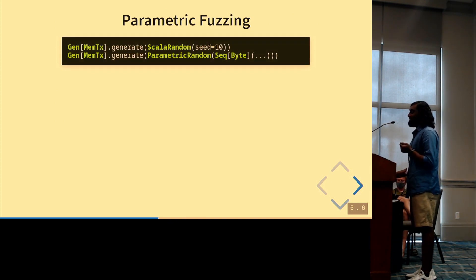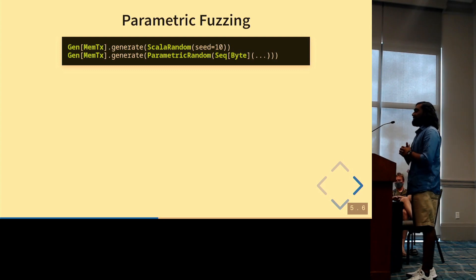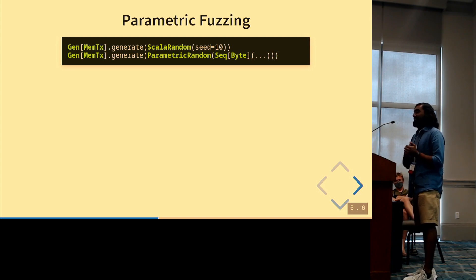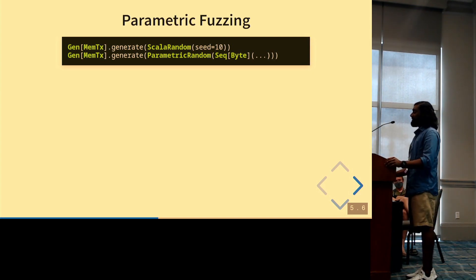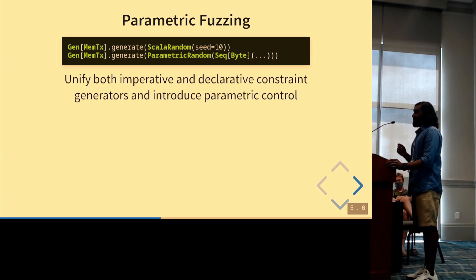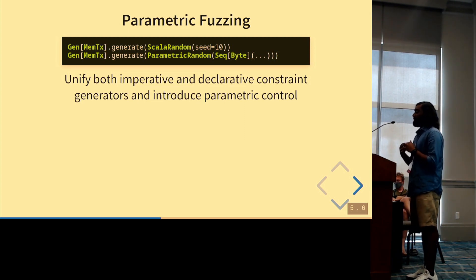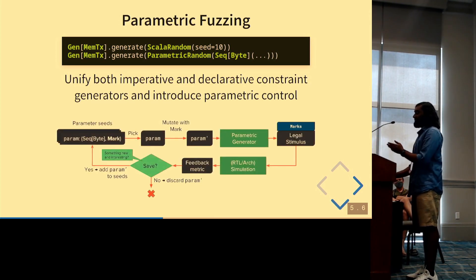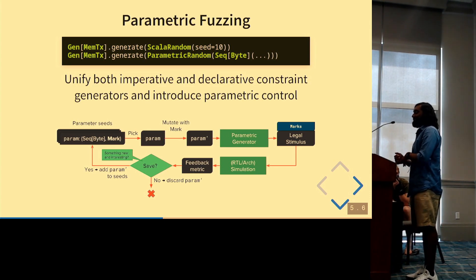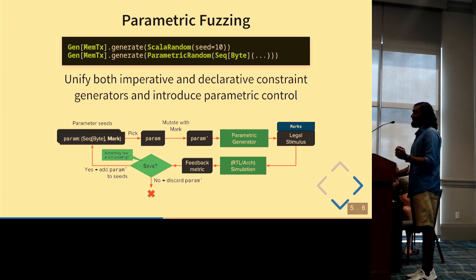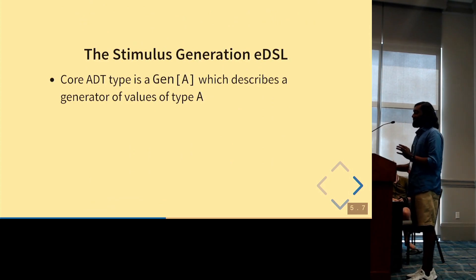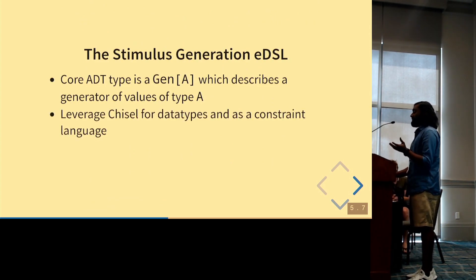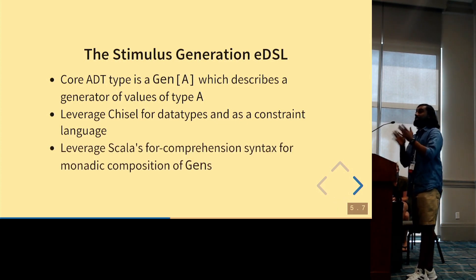One use case is parametric fuzzing. A generator can have two interpretation modes: one using a Scala-based PRNG, and another using a parametric byte stream — a sequence of bytes that drives generation. We're working to unify imperative and declarative constraint generators under parametric control, which is straightforward for imperative generators but trickier for declarative ones. Ultimately this feeds into a parametric fuzzing loop where each byte is marked with how it's used in randomization, so the mutator can more intelligently decide which bytes to mutate to reach a target stimulus metric in RTL simulation.